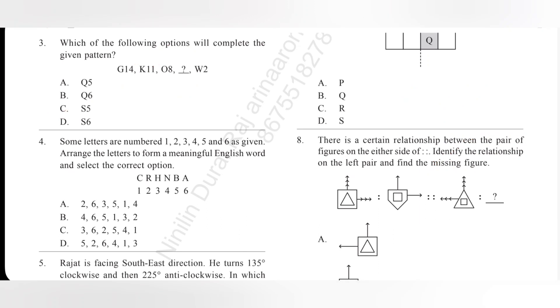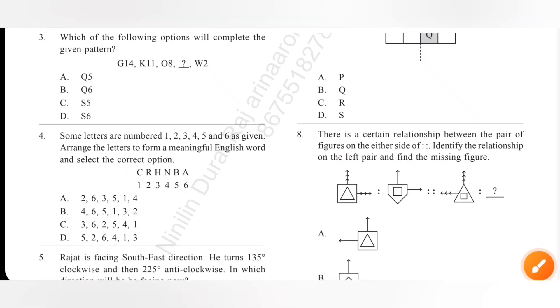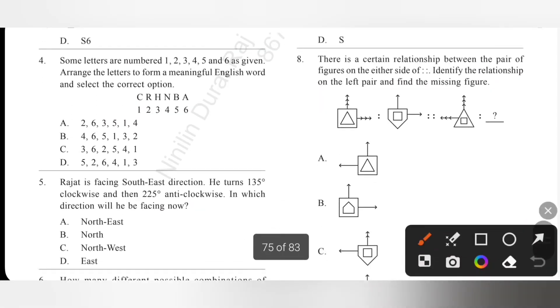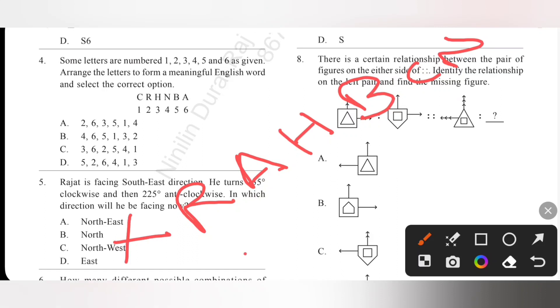Fourth one, some letters are numbered 1, 2, 3, 4, 5 and 6 as given. Arrange the letters to form a meaningful English word and select the correct option. Option A: 2, 6, 3, 5, 1, 4. So 2 is R, 6 is A, 3 is H, 5 is B, 1 is C and 4 is N. So it is not a meaningful word.